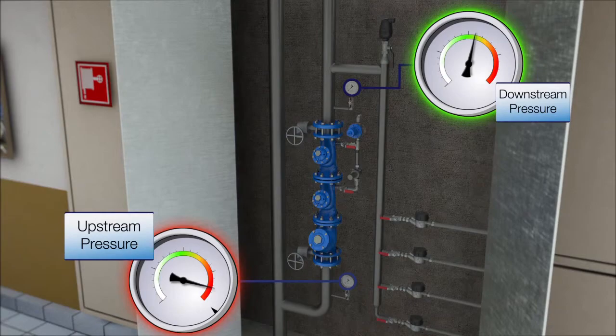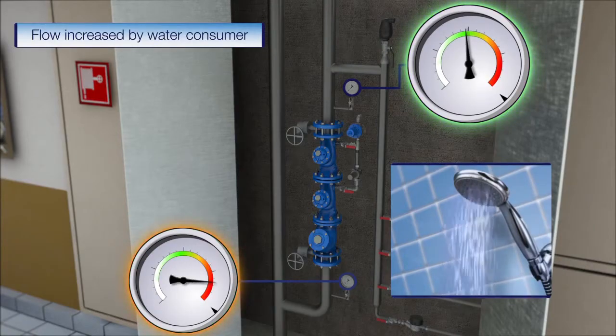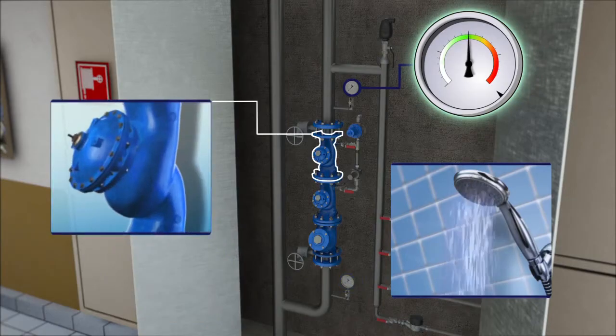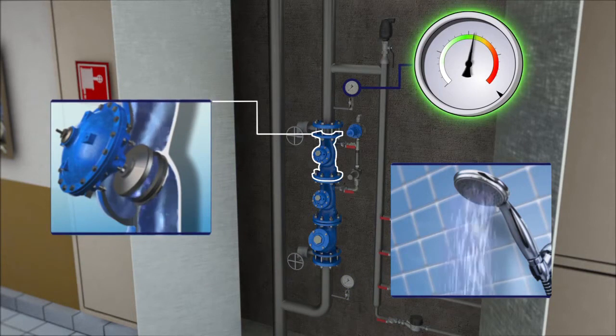At this stage, the residents do not use water and the pressure is stable. When the residents start using water, the flow increases and the downstream pressure drops relative to the flow rate increase. The pressure reducing valve increases the pressure until the downstream pressure is back to normal level.